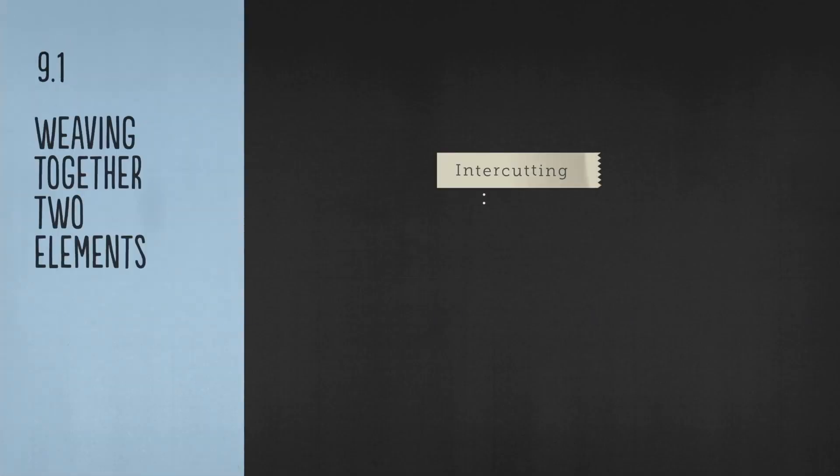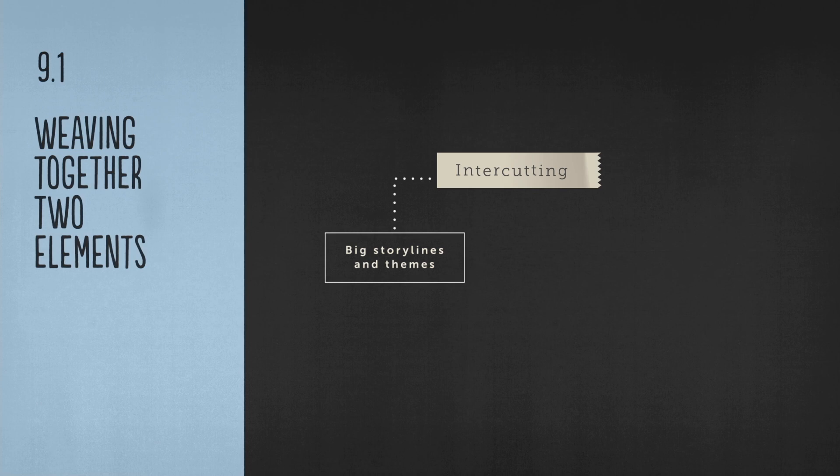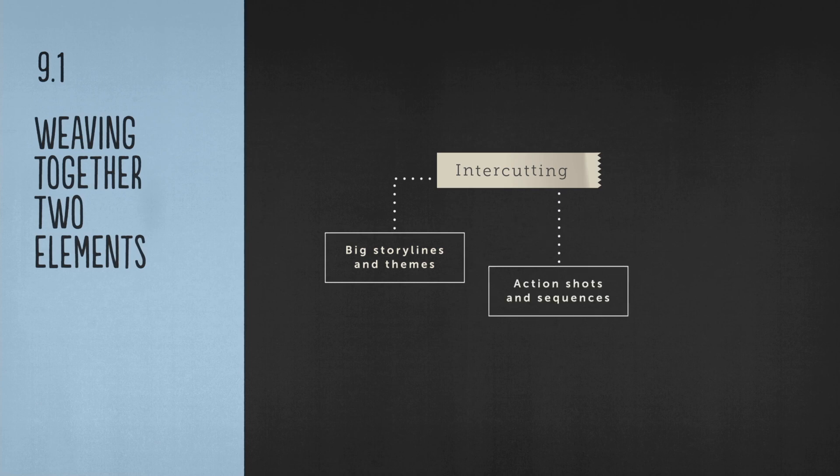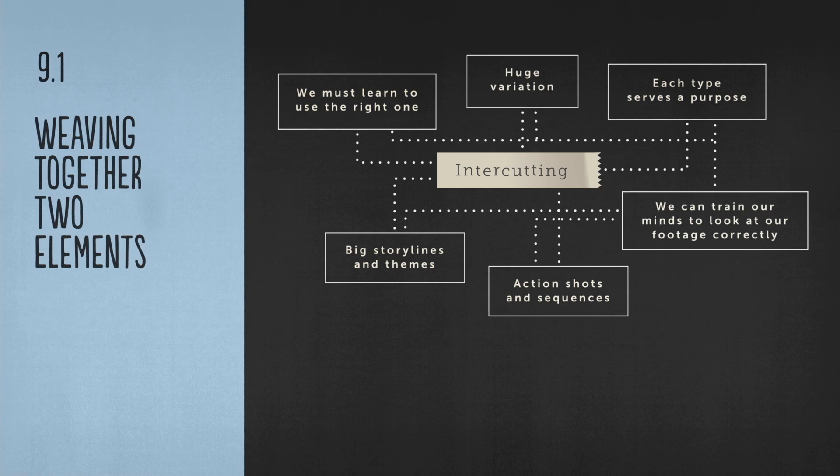In a broad sense, intercutting is the weaving together of two or more separate elements into a coherent and seamless sequence. It could be large or small. We can be intercutting big storylines and themes, or we can weave smaller action shots together. Each type serves a purpose, and we must learn when to use the right one when they are called for in our scene.